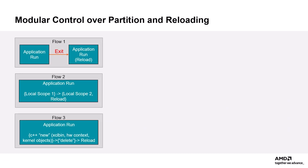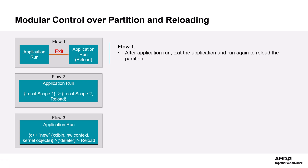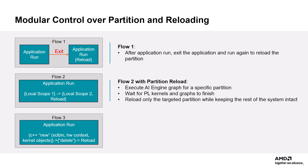While incremental AI Engine compilation streamlines the build process by focusing on only the modified parts of the graph, the new partition reload flow takes this efficiency a step further by enabling independent, targeted reloading of specific partitions. In flow one, the entire application had to run, complete, and then exit before performing a full reload of the entire system for any updates — inefficient and time-consuming for large applications. Now, with flow two and the new partition reload, we gain significant efficiency. Each partition is treated independently, and only the targeted partition is reloaded while the rest of the system continues to run, reducing overhead and allowing focus on specific parts of the system.